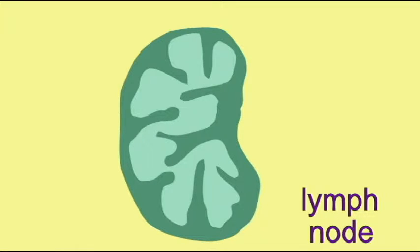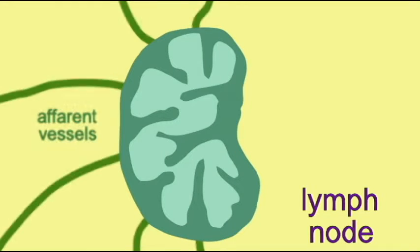Lymph nodes are lymphoid organs which are encapsulated in connective tissue. They vary in size — they can be 1 to 25 millimeters in length. They are usually found in groups, and they may be superficial or deep.